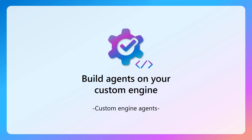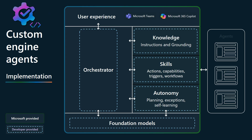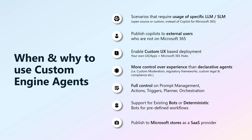For maximum flexibility, you can build custom engine agents. These give you full control over the foundational model, orchestration, and user experience. Custom engine agents can use models and orchestration provided by Microsoft, developers, or your own platform. You have complete control over knowledge, skills, planning, and user experience, allowing integration with Microsoft 365 Copilot and Teams. Choose custom engine agents when you need to use specific language models, publish copilots to external users, enable custom user experiences, or require more control over moderation, compliance, and orchestration. They also support existing bots in SaaS deployment.